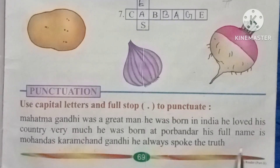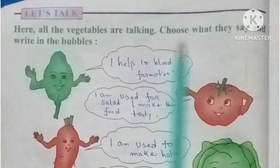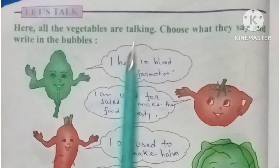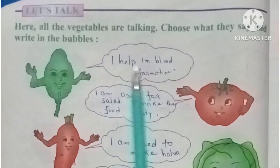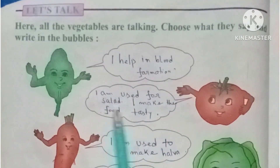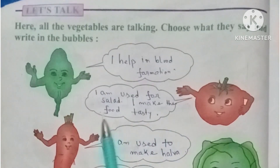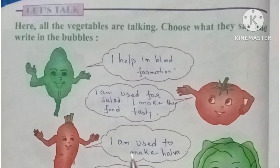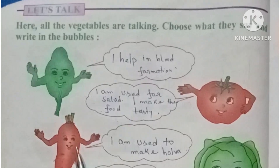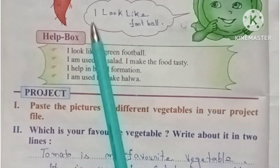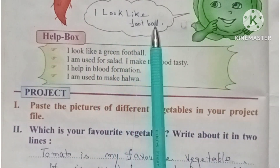All the vegetables are talking. Choose what they say and write in the bubbles: I help in blood formation. I am used for salad. I make food tasty. I am used to make halwa. I look like a green football.